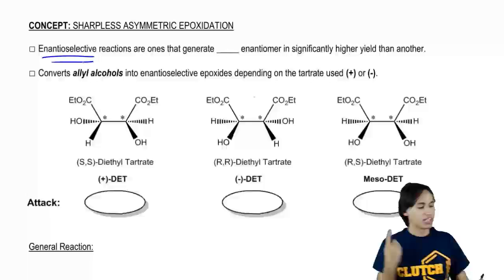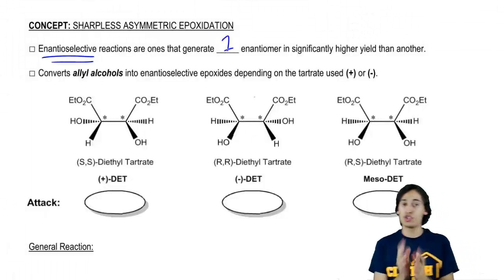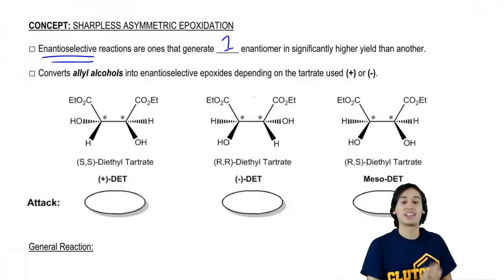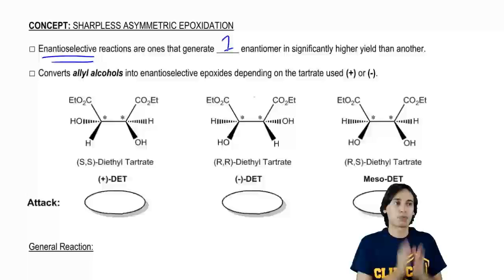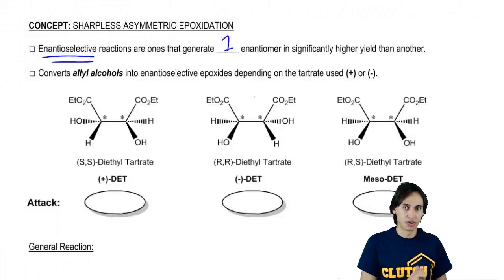What that means is that it's going to generate only one of the two possible enantiomers in excess. In fact, it's almost going to perfectly select one enantiomer over another.